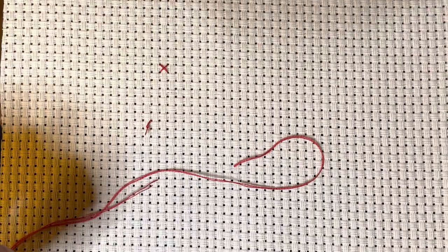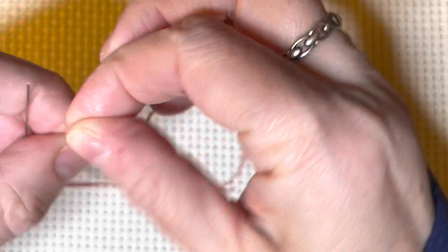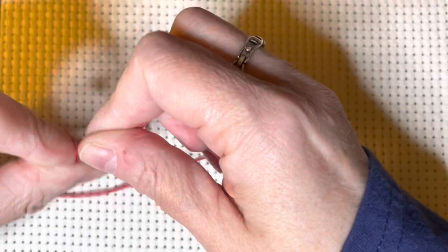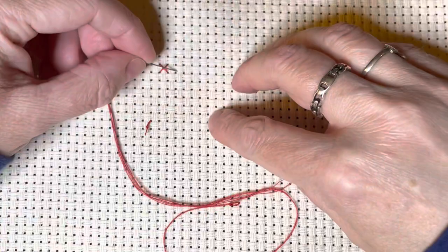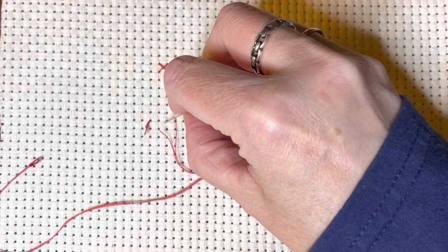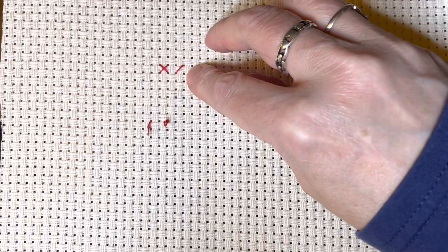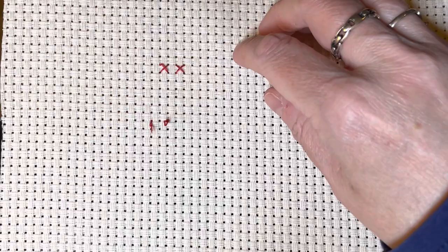So how do you start a thread when you don't have that loop? Well, you basically reverse the waste knot process. So if you don't have a loop to start with, you put a knot in the end of your thread. And let's say I need to put another stitch right there of this color. So again, about five to 10 stitches away, I go down through the fabric, come up where I want that stitch, and I just continue stitching like so.